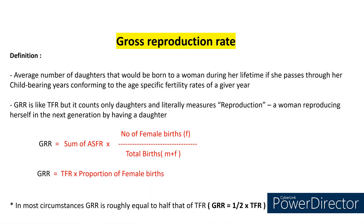Gross Reproduction Rate. It is the average number of daughters that would be born to a woman during her lifetime if she passes through her childbearing years conforming to the age-specific fertility rates of a given year. So in this case, we are considering only daughters. GRR is like TFR, which we discussed previously, but it counts only daughters, where TFR counts the average number of all children. That's the difference.